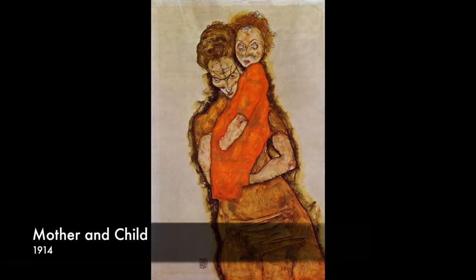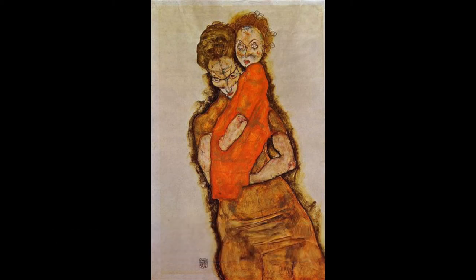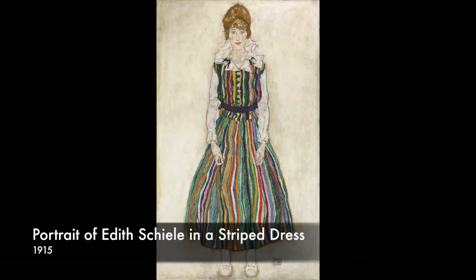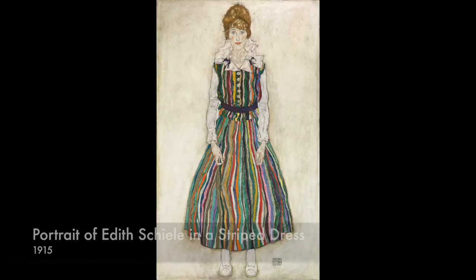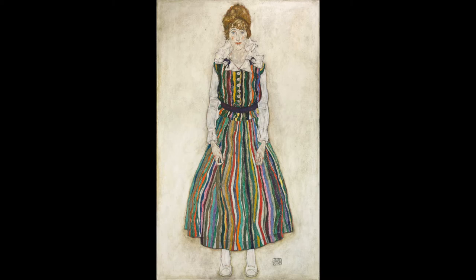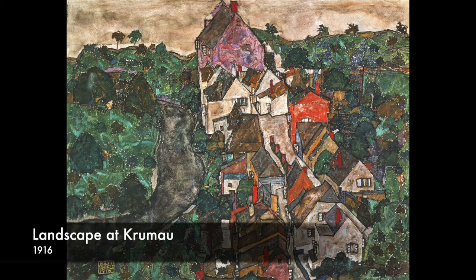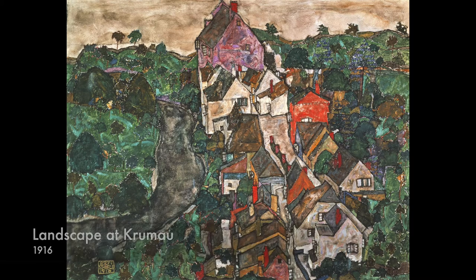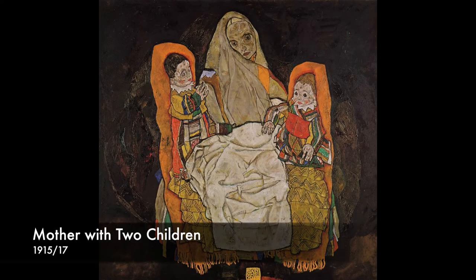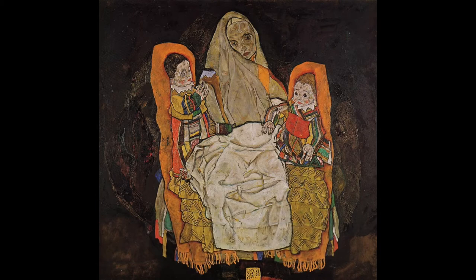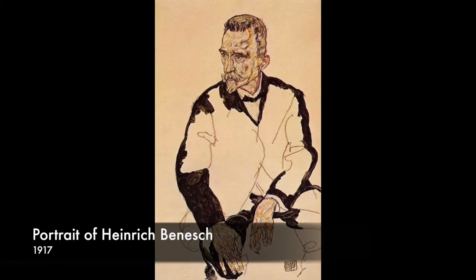Egon Schiele was born on June 12, 1890 and he died on October 31st, 1918. So he was only 28 years old when he died and he died due to the Spanish flu pandemic. His wife died on the 28th of October — she was six months pregnant with their first child — and then on the 31st, three days later, he died.